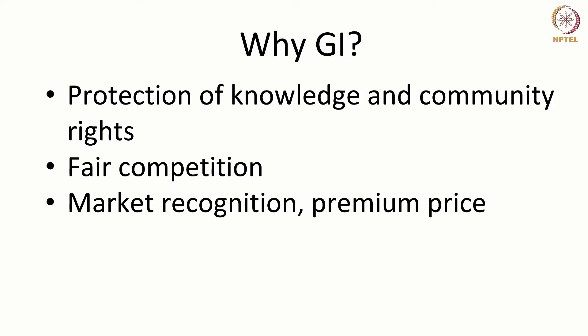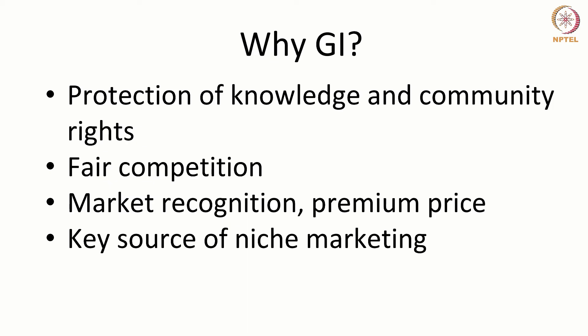Geographical indication, like trademarks, allows people to identify the quality of a product. The market recognizes the product as originating from a particular place, and people may be willing to pay a premium price for it. Hence, it is a source for niche marketing. It also leads to rural development, because craftsmen in rural areas who are protected by a GI will be able to sell their products.